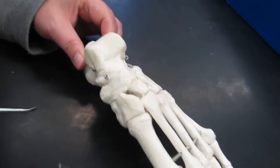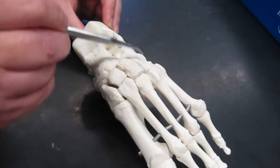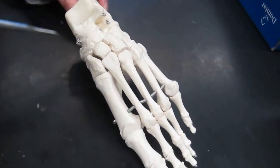Okay, so here we are with the foot. Similar to the hand, we have the tarsal bones. There are seven tarsal bones.